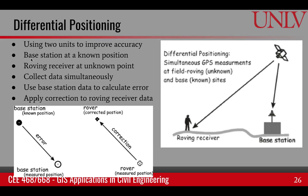So how does this work? The base station is at a known location — I know exactly the latitude, longitude, and altitude of this point. The roving station is at an unknown point. Suppose they both receive signals from the satellites, and these satellite-broadcasted signals have errors — due to signal errors or due to dilution of precision of the satellites themselves. In any case, they are both receiving the same error because they are not very far away from each other.